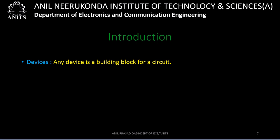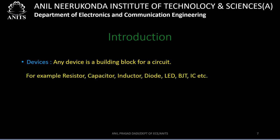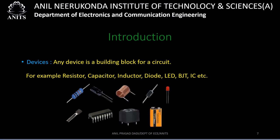The first important term is 'device.' Any device is a building block for a circuit. Examples of devices include resistor, capacitor, inductor, diode, LED, BJT, and integrated circuits. Pictures of these devices are shown: resistor, capacitor, inductor, diode, LED, a 9-volt DC battery, a relay, an integrated circuit, and a transistor in IC form.